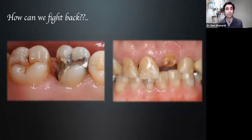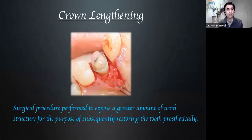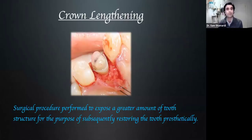This situation of being presented with crown lengthening versus extraction and other options is very common. If we want to save somebody's teeth, whether it's in the aesthetic zone or elsewhere, that process is known as crown lengthening. The formal definition: crown lengthening is a surgical procedure performed to expose a greater amount of tooth structure for the purpose of subsequently restoring it. Our primary etiology is insufficient tooth structure — whether from decay, trauma, or other reasons.